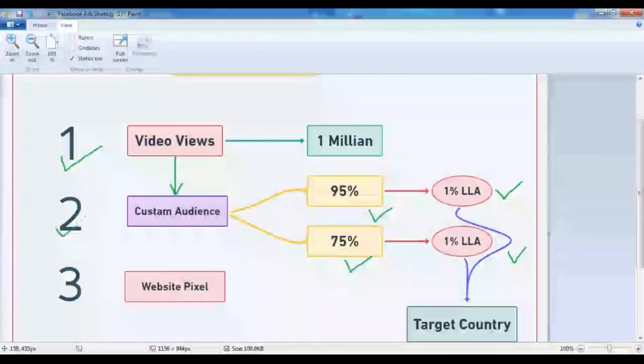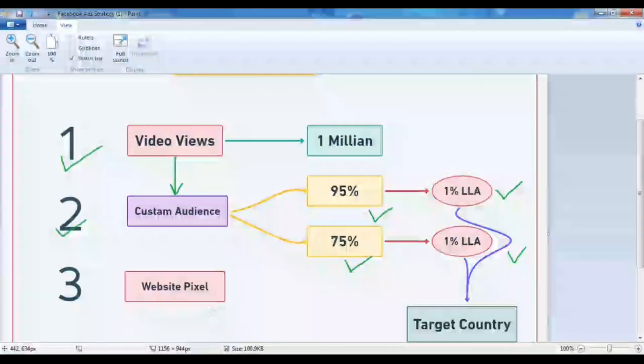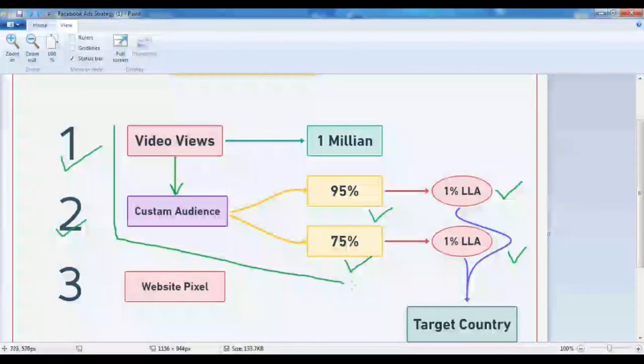You can do the same through website pixel. So website visitors you can make 1 million through ads. Through this you can create custom audience and then lookalike audience you can create like this.